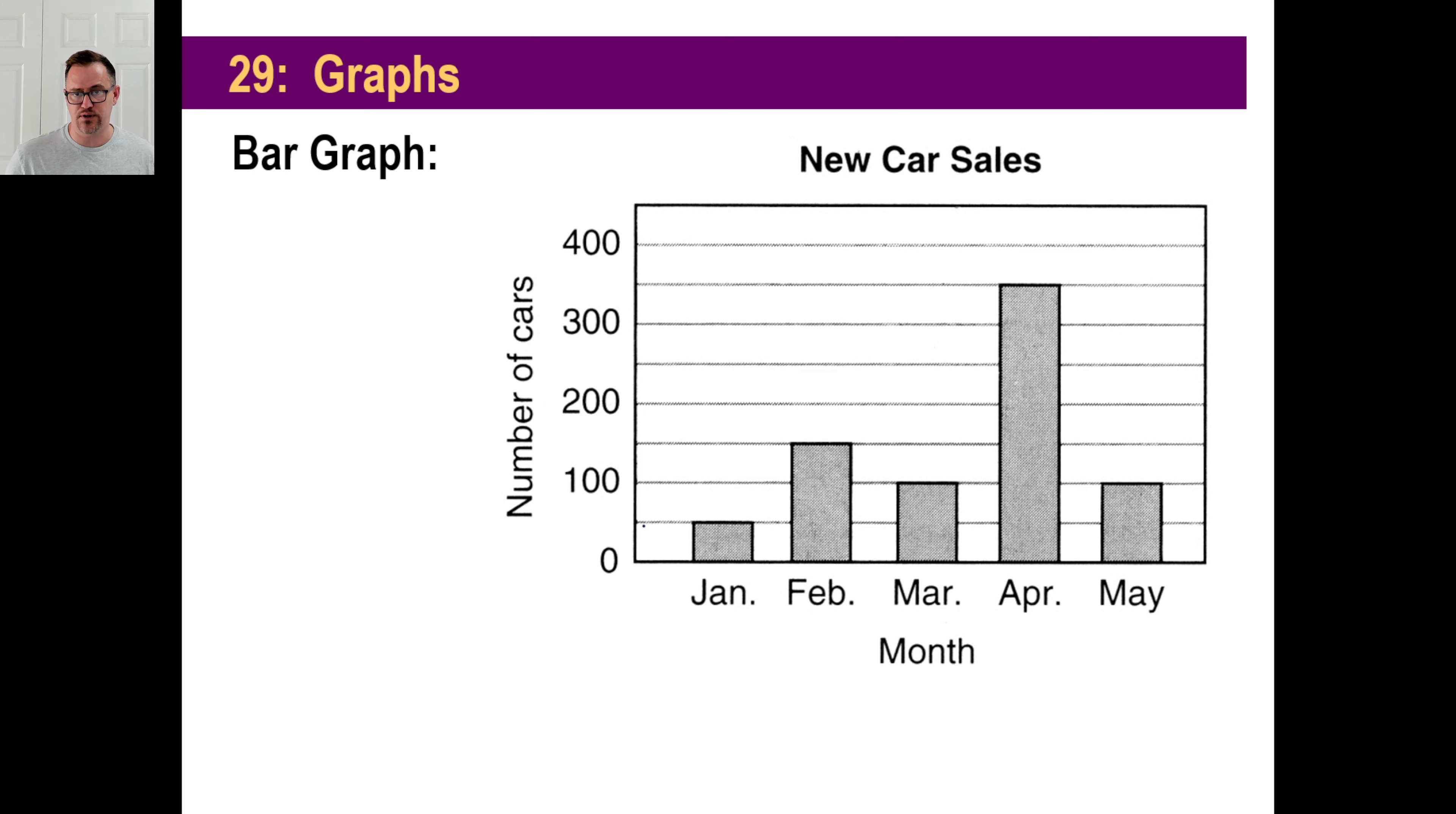So each one of these lines represent 50 cars sold. In January, there were 50 cars sold. In February, there were 150 cars. In March, right at 100. April was a good month, 350 cars sold. And then May, back down to 100. That's the bar graph.